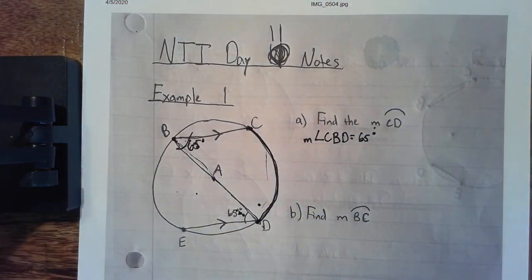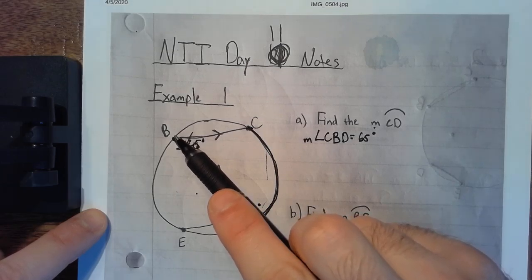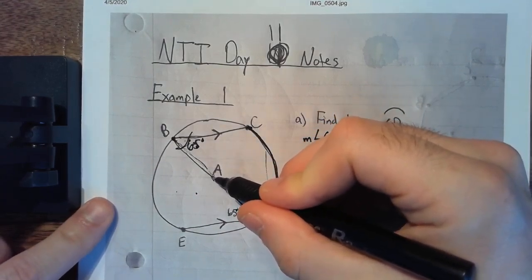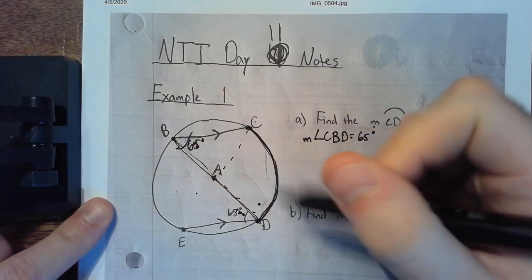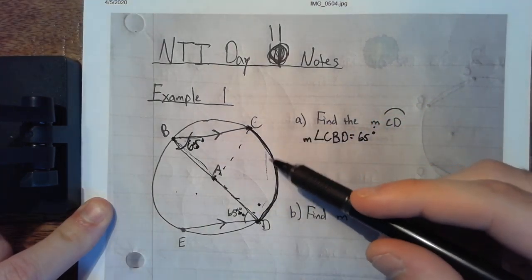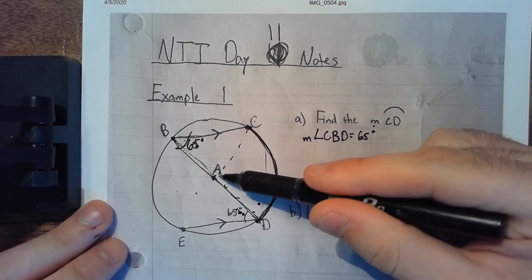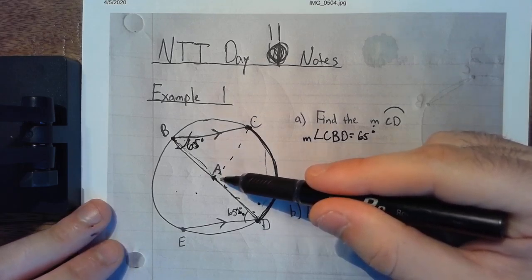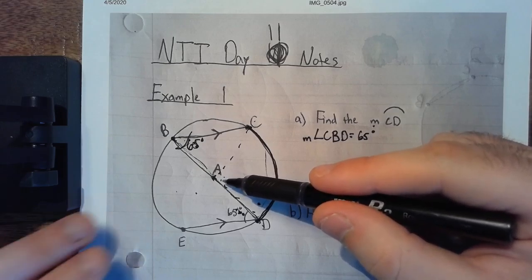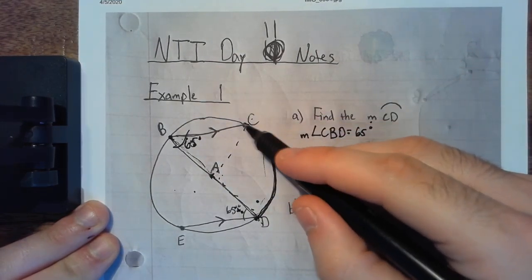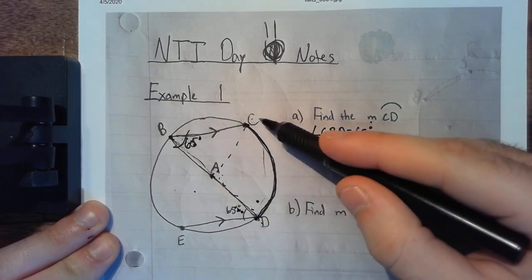Thinking back to before spring break — this is the inscribed angle. The inscribed angle is half of what the central angle is. If I had a central angle, it's not drawn, but you can draw a central angle from A to C and then A to D. This minor arc is going to equal this central angle, and the central angle is two times the size of the inscribed angle.